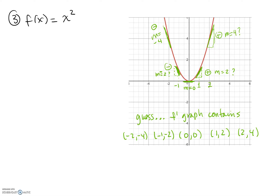So basically my guess is that f prime of x should contain the points: at x equals 0, f prime is 0; at x equals 1, f prime is maybe 2; at x equals 2, f prime is maybe 4. So my guess is that the graph of the derivative f prime will probably contain points like this. Let's go look at the algebraic definition and see what we get.